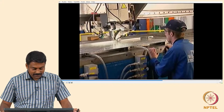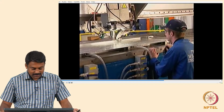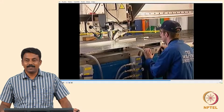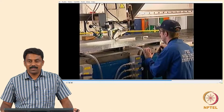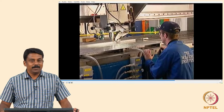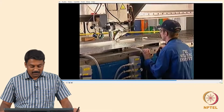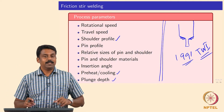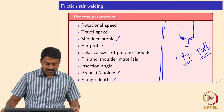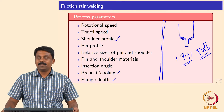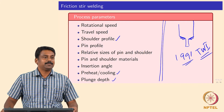Friction stir welding is a very simple process — you do not need complex physics to understand arc, plasma, ignition, or ionization. All you have is a rotating tool. We will wind up here and look at more of the physics of this process in the next class.